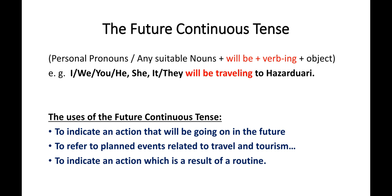Look at the example sentences: I will be traveling to Hazardwari. We will be traveling to Hazardwari. You will be traveling to Hazardwari. He, she, it, and they will be traveling to Hazardwari. Students, carefully take care of the verb used here. Remember: 'will be' plus the -ing form of a verb indicates that the sentence is in the future continuous tense.